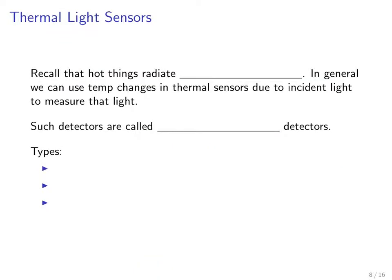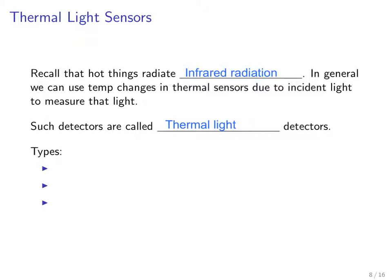Recall that hot things radiate infrared radiation. In general, we can use temperature changes in thermal sensors — not actual light sensors per se — but thermal sensors responding to incident light to measure that light. Incident light on a thermal sensor will change its temperature, and we can use that to measure the light. The first kind of light sensor we'll discuss is these thermal light sensors, which are based on temperature changes in the device due to incident light.